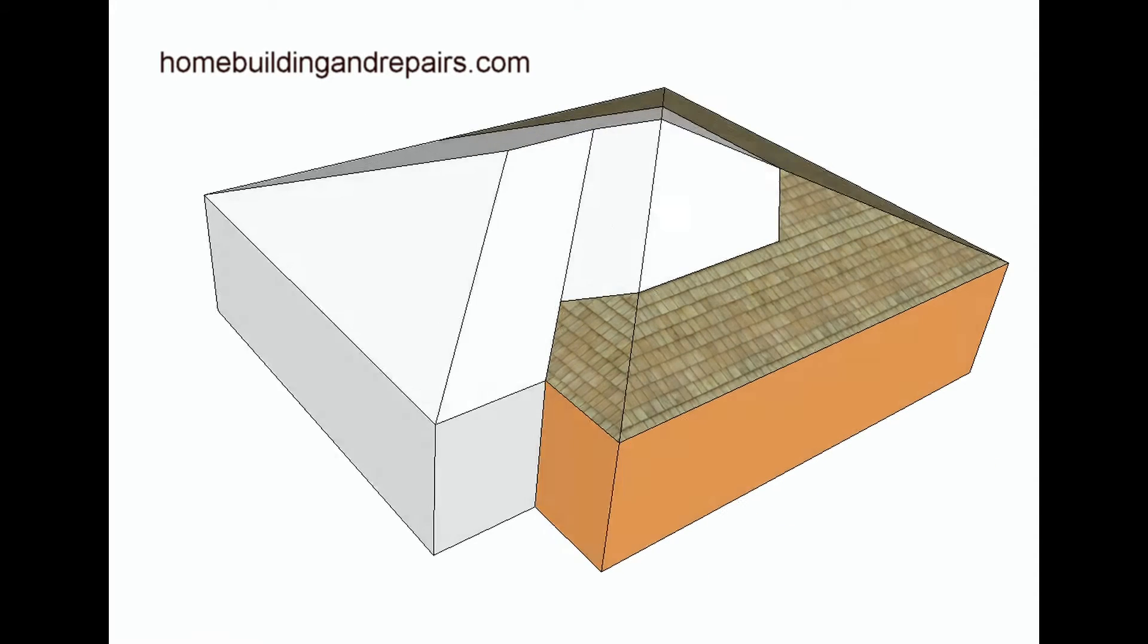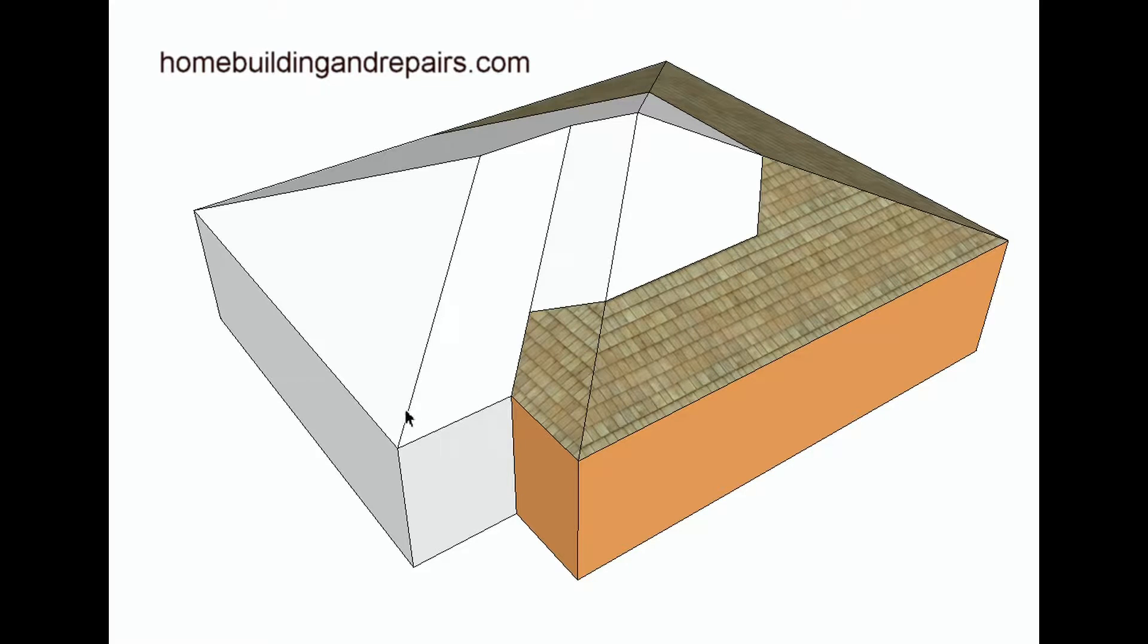And then this would be the roof. Now the roof would basically be built. You would have a big hip coming off of here, valley, an extended hip, extended hip here.